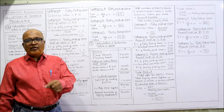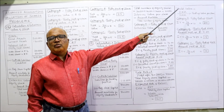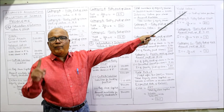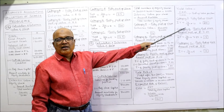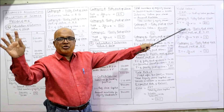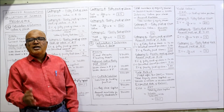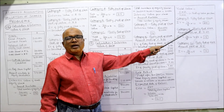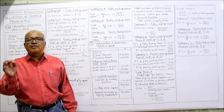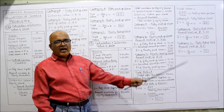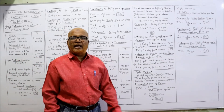NRR (normal rate of return) is given as 8%. Yield value formula: ERR divided by NRR, multiplied by paid up value per share. Category A — fully paid up, paid up value 10 rupees: 16/8 into 10 = 20 rupees. Category B — paid up value 7.5 rupees: 16/8 into 7.5 = 15 rupees. Category C — paid up value 5 rupees: 16/8 into 5 = 10 rupees.